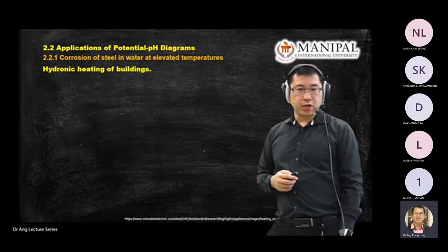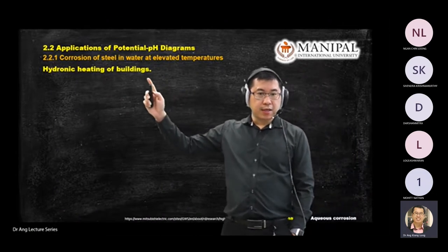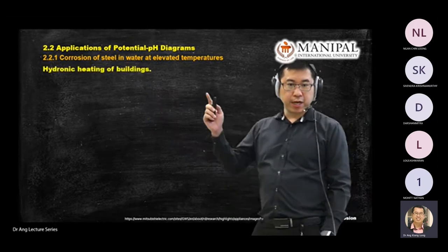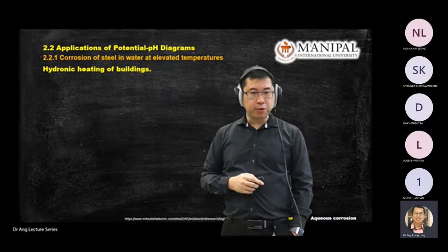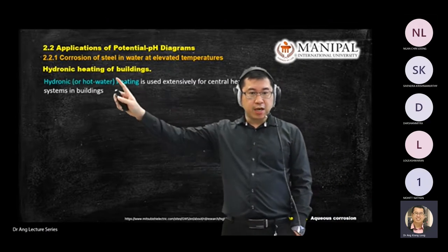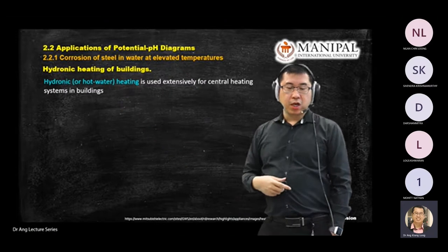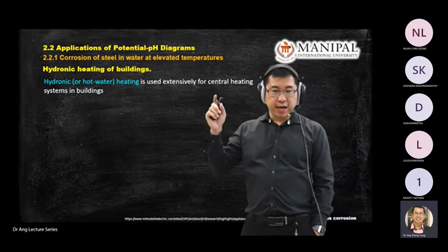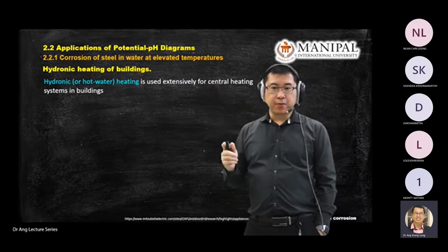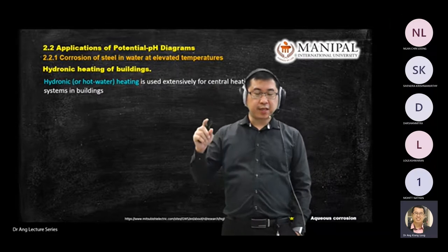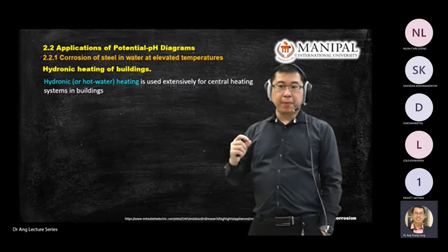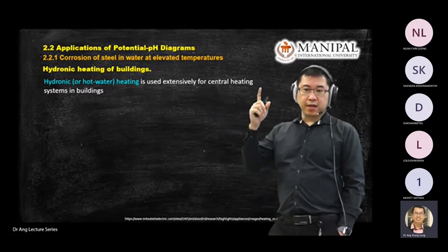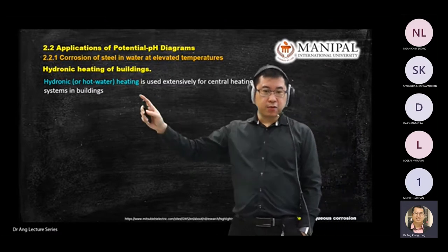Another example is the hydronic heating of buildings. Just like if you have a water heater for your shower at home — you use alloy or copper pipes for heat transfer to enjoy the hot shower. This example is more specific to building heating systems.